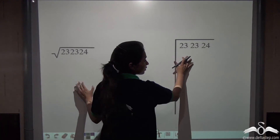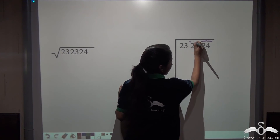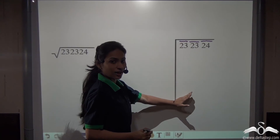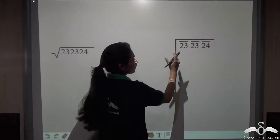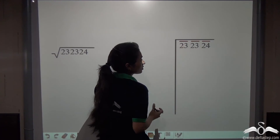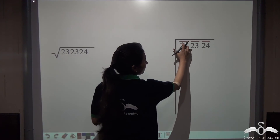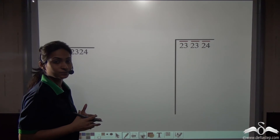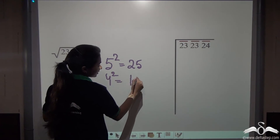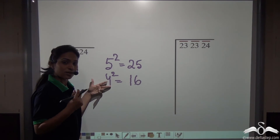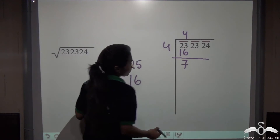Let's work through 232324. We write it in division format. First, place bars starting from the ones digit: the first pair is 24, the second pair is 23, and the third pair is 23 — three pairs with no single digit left over. Starting with the leftmost bar, find a digit whose square is less than or equal to 23. We know 5² = 25, which is too large, and 4² = 16. So we use 4, giving a quotient of 4 and remainder of 7.